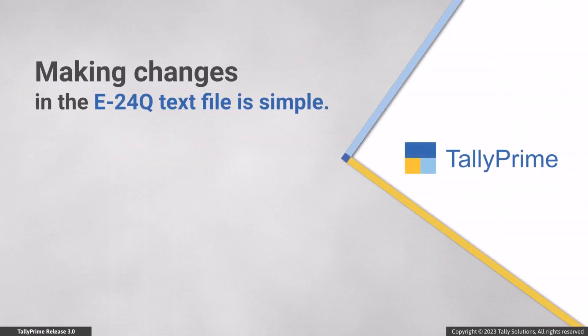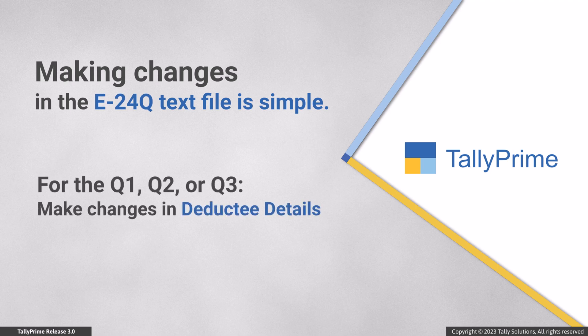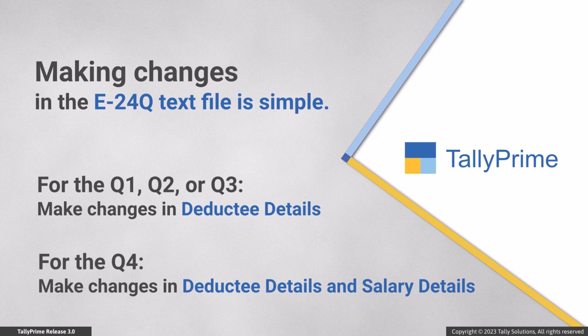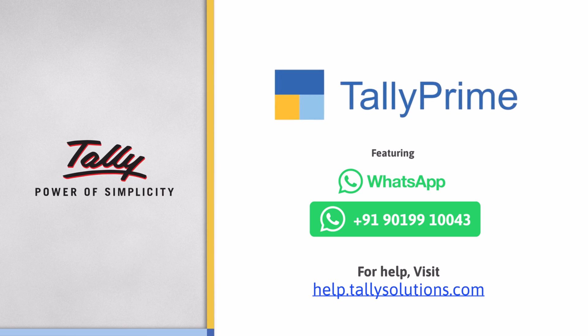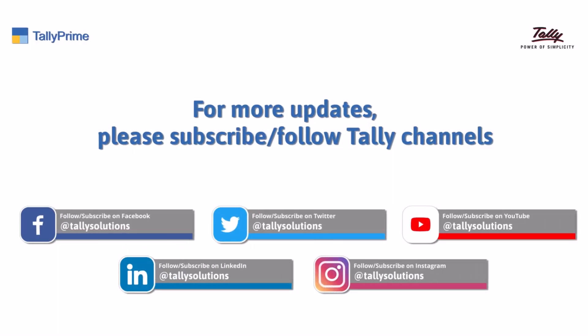As you saw, you can easily make the necessary changes to the E24Q text files exported from Tally Prime. All you need to do is make the changes in the deductee details for the first three quarters of the financial year. For the fourth quarter, you need to make changes to both deductee details and salary details. Thank you. To know more about Tally Prime features, visit help.tallysolutions.com. Subscribe to the Tally Solutions channel for the latest videos.